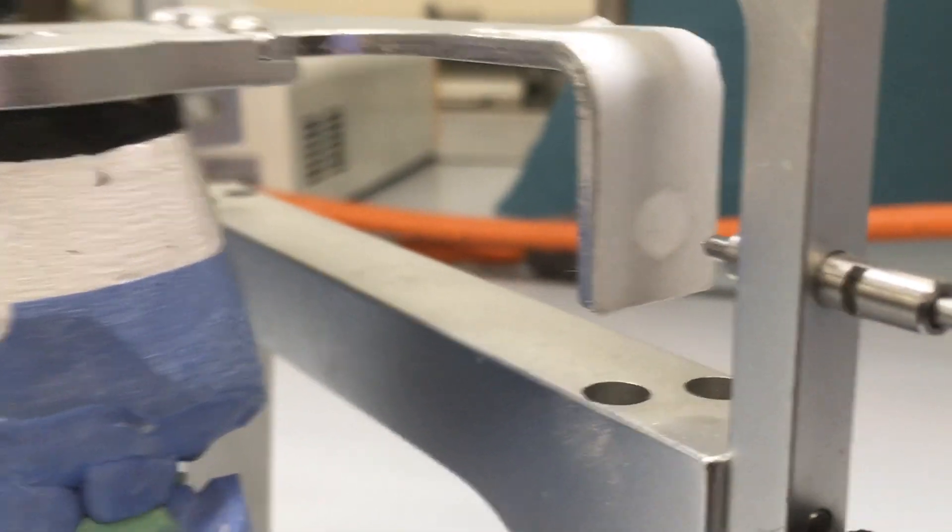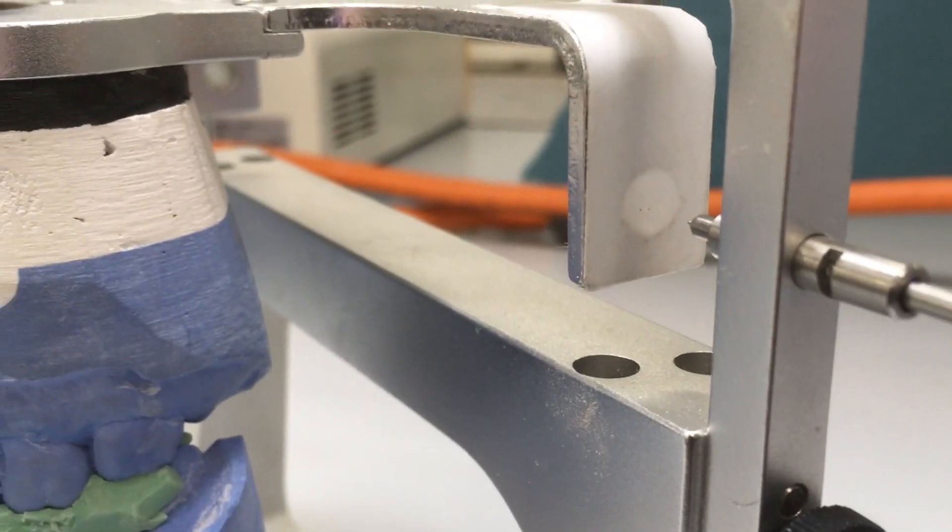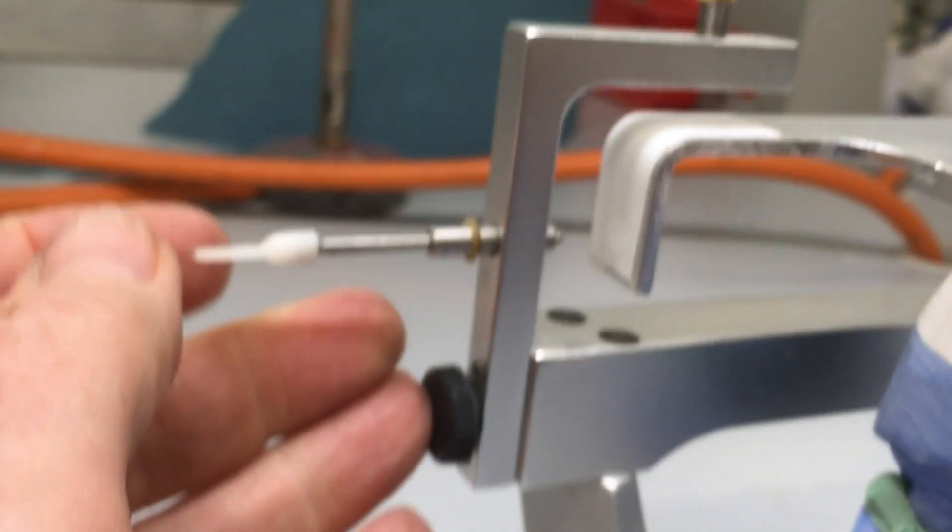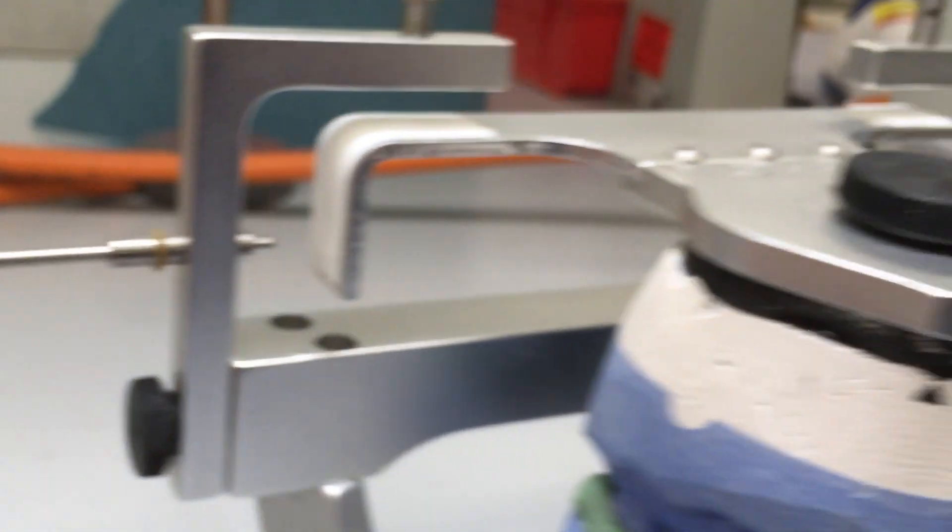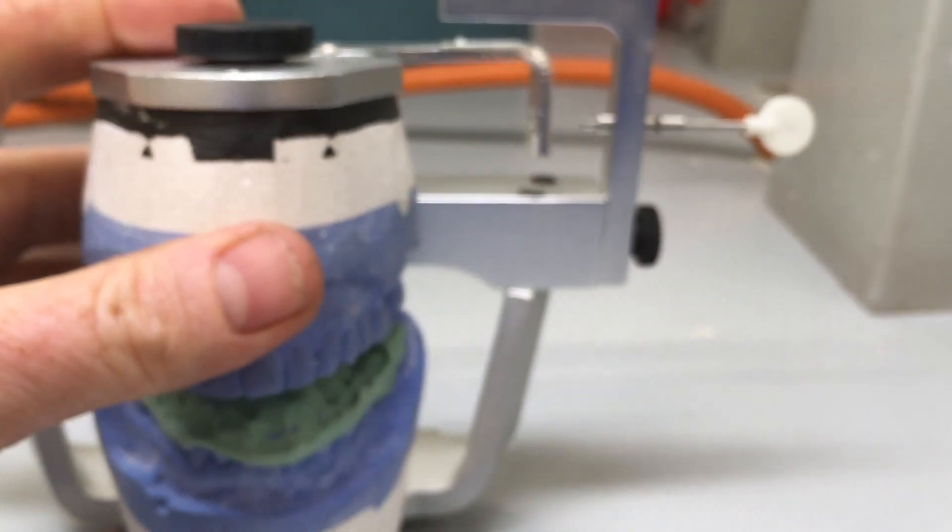We can do the same on the other side. Now if our records, if our two, three, four, whatever number of records we've taken, are the same but just at different vertical dimensions,